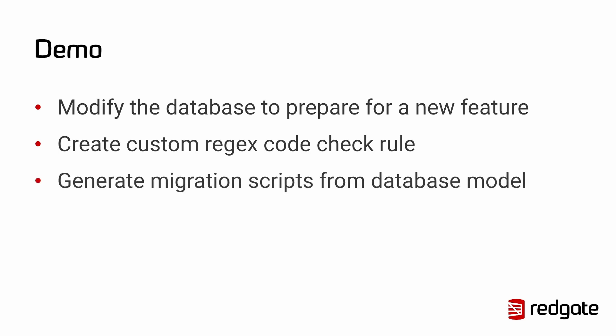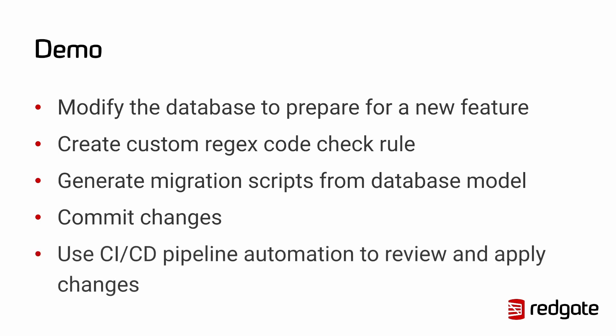Then we'll use Flyway Desktop to actually generate those migrations for us, to help get the database from its previous state — the state model that Flyway is maintaining for us — to the new version of the database through the migration. We'll commit all of these changes into the repository, then push them into our pipeline. First, we'll build the scripts to make sure there are no issues, then promote it into a testing environment, run code analysis and code checks, and verify everything is okay before promoting these changes to production.